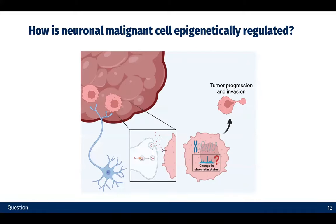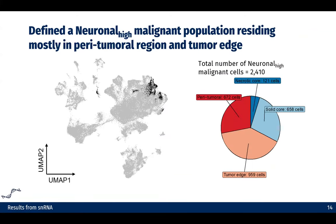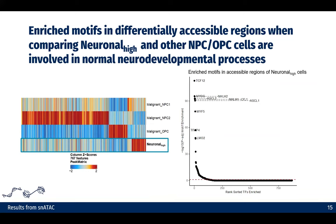We are now wondering how this neuronal malignant cell population is epigenetically regulated. Since we also have the chromatin accessibility profile of the cells, we first identified a neuronal-high malignant population in our sample cohort. As shown in the bar graph and pie chart, this population is mostly enriched in the peritumoral region and the tumor edge. By using this label and conducting differentially accessible region analysis, we identified regions that are differentially open in this population. Looking at those specific open regions in our neuronal-high population, we identified motifs associated with normal neurodevelopmental processes, such as CTF-12, ASEL-2, and ASEL-1.